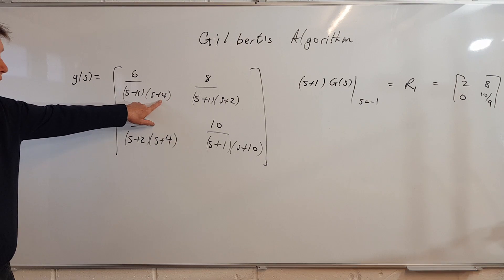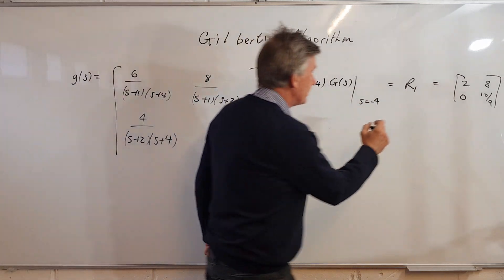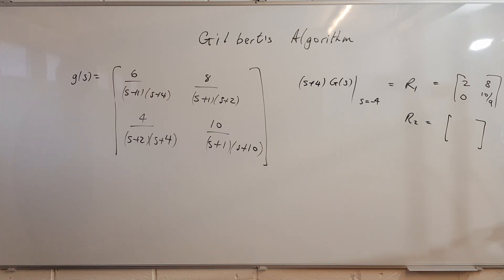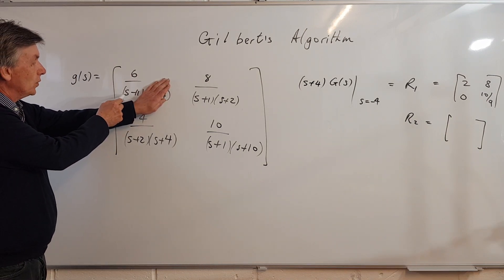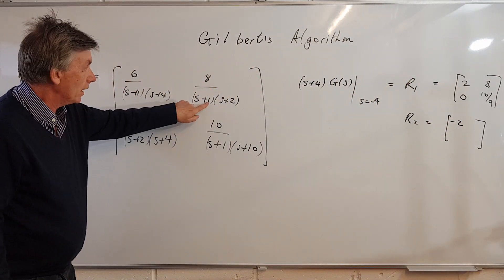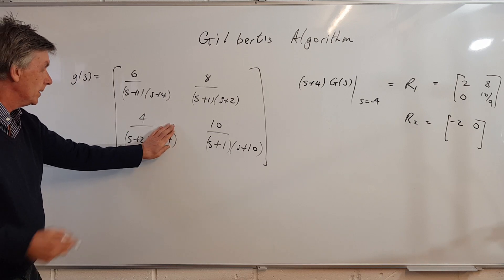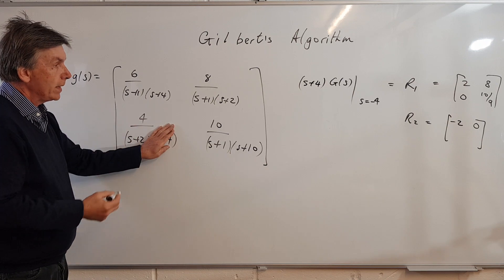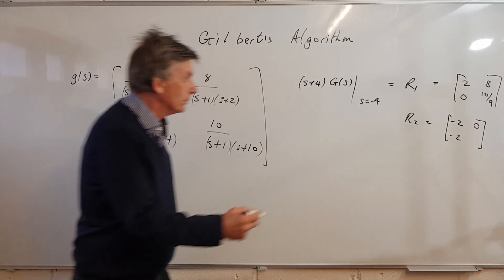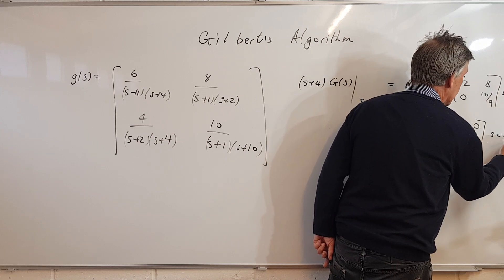Next we move on to the pole at s = -4. We work out (s+4) times G(s) evaluated at s = -4, and this gives us R2 — another 2×2 matrix. Putting s = -4: -4 and 1 is -3; -3 into 6 gives -2. There are no (s+4) factors in the next term, so it's a 0. We do have one in another term: -4 and 2 is -2; -2 into 4 is -2. And the last entry has no (s+4), so that's a 0. This matrix R2 is associated with s = -4.